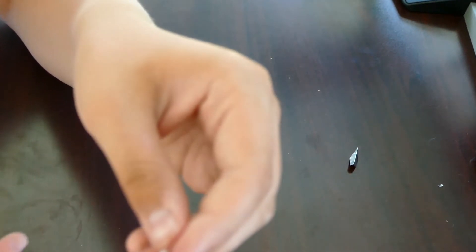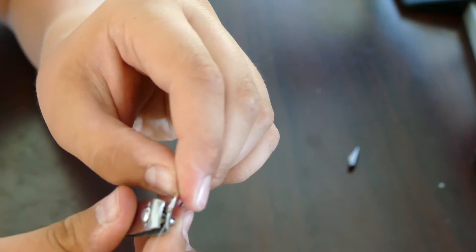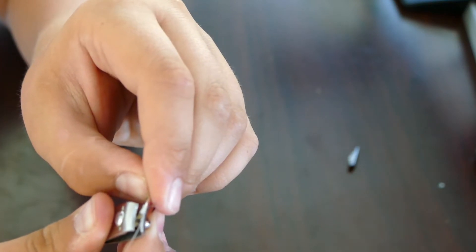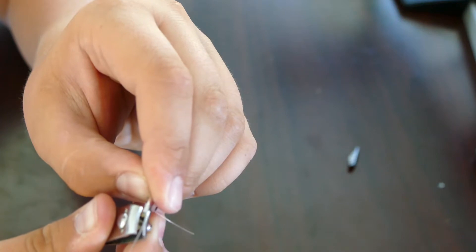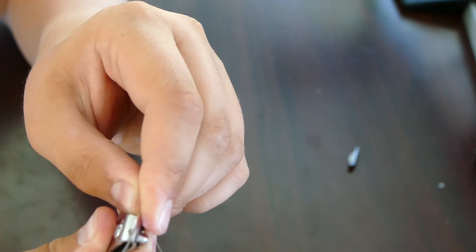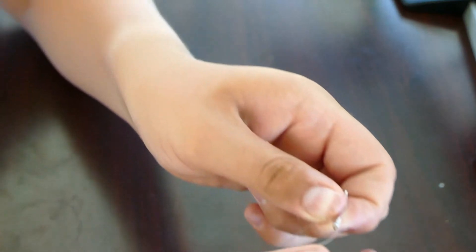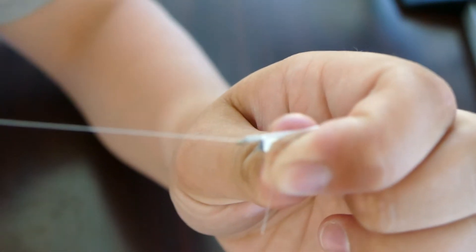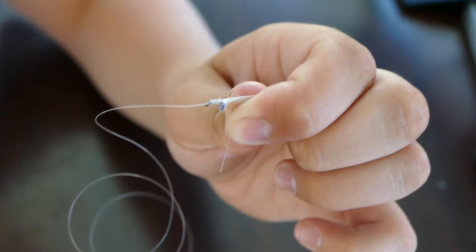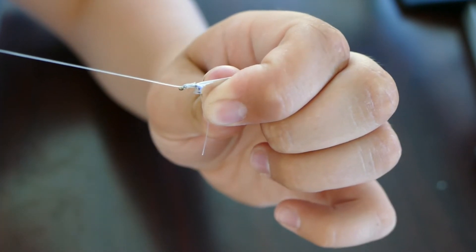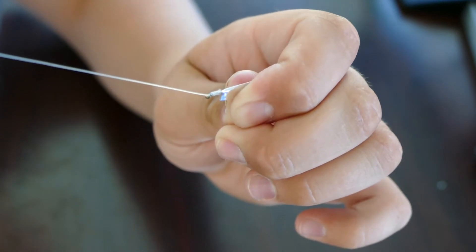So once you cinch it tight, I like to use a pair of nail clippers so you can get that tag end cut right about... almost there. Now once you cut that little tag end piece, you're left with something that looks like this.